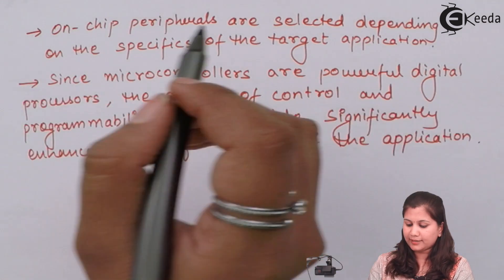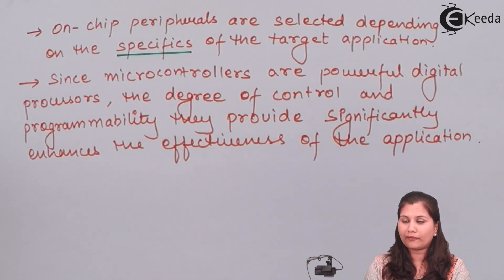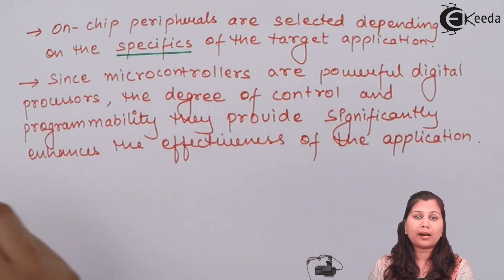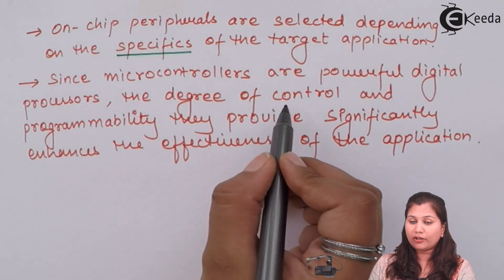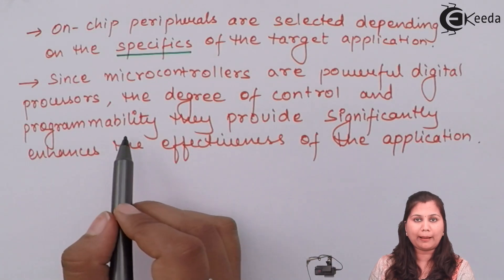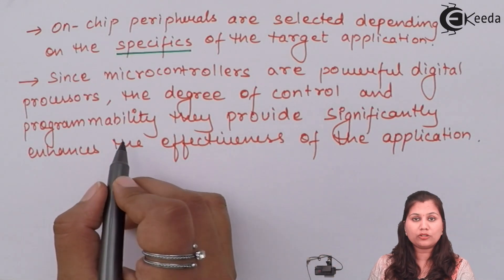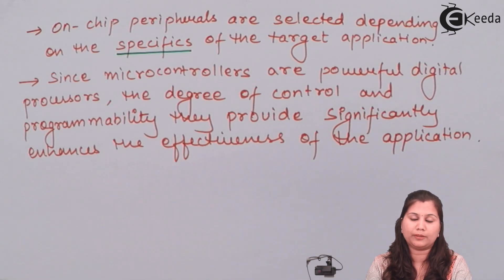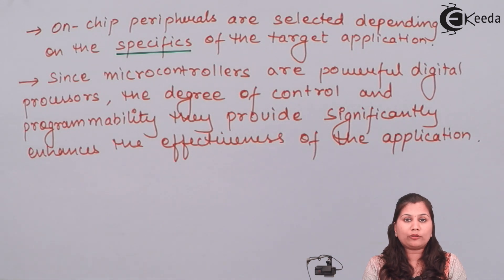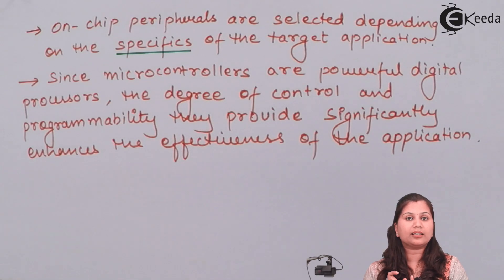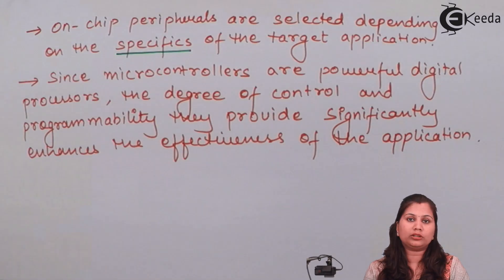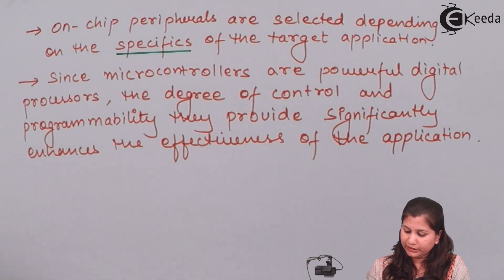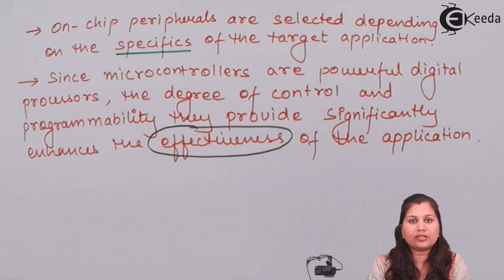On-chip peripherals are selected depending upon the specifications of the target application for which the microcontroller is to be used. As these microcontrollers are powerful digital processors, the degree of control and programmability they provide significantly enhances the effectiveness of the application. Using a microcontroller in place of a microprocessor increases the efficiency of the application, because microcontrollers are powerful digital processors that can better control operations.